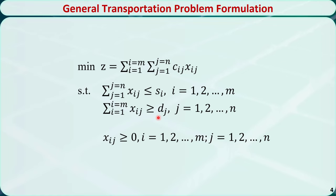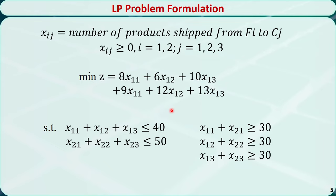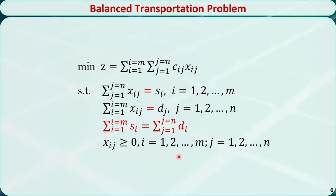The example we explained here is also a balanced transportation problem. This is because the total supply is equal to the total demand: 40 plus 50 is equal to 90, which is equal to 30 plus 30 plus 30. This is the formulation of a balanced transportation problem. The difference between the general transportation problem and the balanced transportation problem is in the constraints — these two will be changed to equality constraints, and the total supply is equal to the total demand.